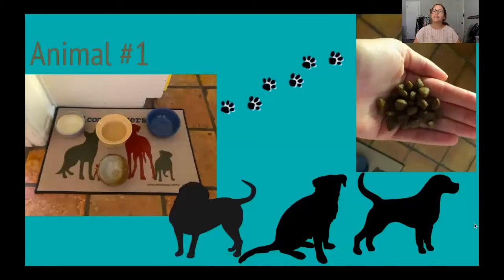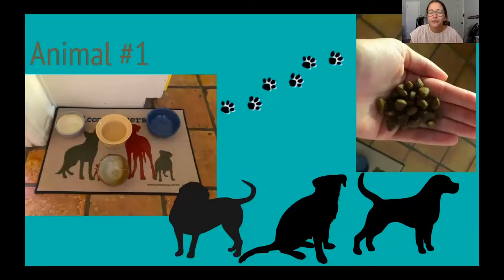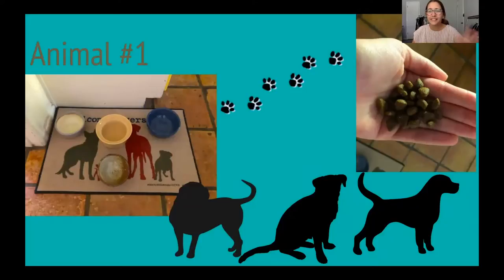Okay, so animal number one. The first pictures are of some food bowls — there are four of them. I also see some foot tracks on the ground on the top, and on the top right I see some little bits of food, so it's something that eats small pieces of food. And then I see three silhouettes on the bottom as well. This is your first clue as to what animal number one is. You can pause right now to write down some sentences or reminders about what you see in the pictures.